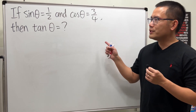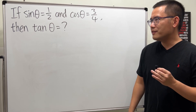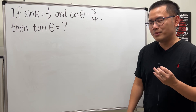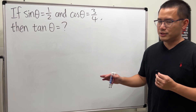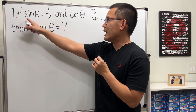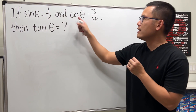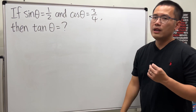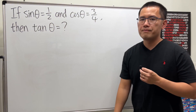I almost put this question on my test, but thankfully I caught a small mistake before I did. Let me talk about this with you. Right here we have: if sin θ is equal to 1/2 and cos θ is equal to 3/4, and we are going to find out the value for tangent θ.